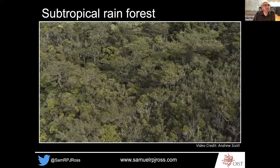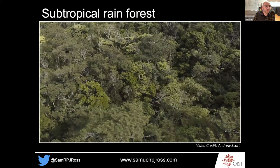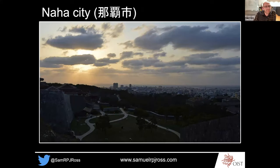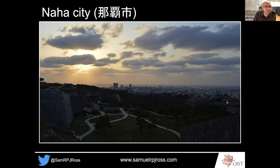Here's a fairly typical image of the north: a subtropical dipterocarp rainforest with a fairly closed canopy. And here's a fairly typical image of Naha in the south. This is the Shuri Castle, which appears on the 2,000 yen banknote here. Just beyond the castle walls you can see dense urban area right up to the sea. There's really not much spare natural land remaining in the south.